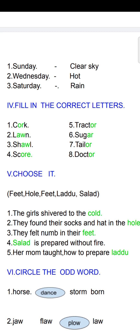Third: shawl, S-H-A-W-L. Fourth: score, S-C-O-R-E. Fifth: tractor, T-R-A-C-T-O-R. Sixth: sugar, S-U-G-A-R. Seventh: tailor, T-A-I-L-O-R. Eighth: doctor, D-O-C-T-O-R.